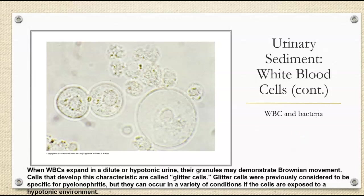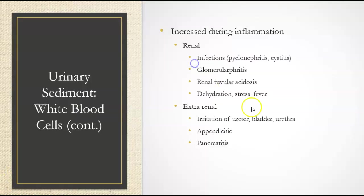When we see these in a hypotonic urine, the granules will actually potentially demonstrate Brownian movement. These are called glitter cells — basically the cells will shimmer at you with all the granules moving. They used to be considered specific for pyelonephritis, but we can see this happen if the cells are exposed to that hypotonic environment.